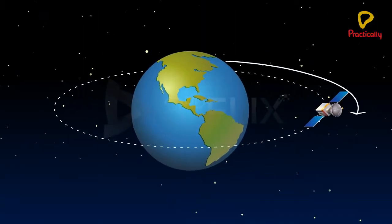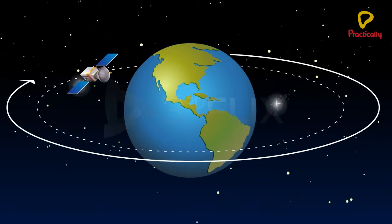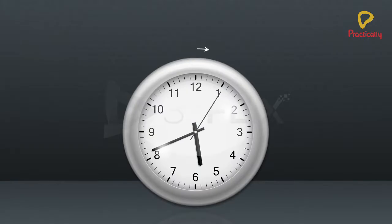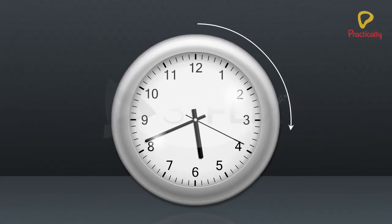Satellite orbiting the Earth is an example of a circular motion. Similarly, hands in a clock move in a circular motion.